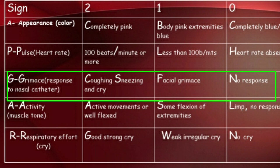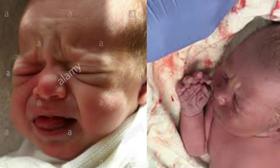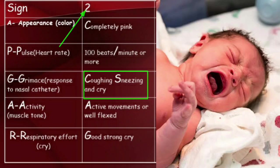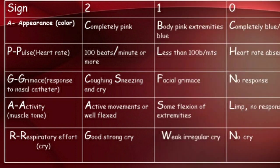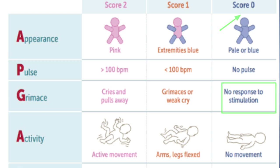The third parameter is G for Grimace, or reflex irritability. This is assessed using a nasal catheter to stimulate the nasal area. If the baby is actively coughing, sneezing, or crying, the score is 2. If the baby shows only a facial grimace, the score is 1. If there is no response to the nasal catheter, the score is 0.